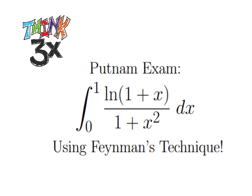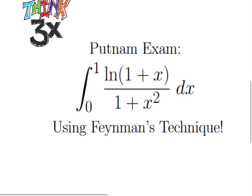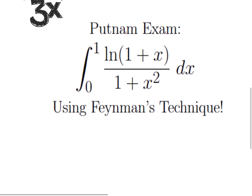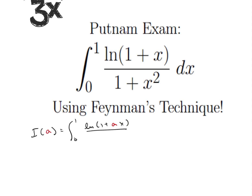Feynman's technique is a method for solving integrals where we introduce a dummy variable. The reason we introduce the dummy variable is to get the integral in a form that we can integrate with respect to x. This thing right here looks really, really ugly. It's not impossible to integrate with respect to x, but it's pretty tough. So what we're going to try to do is make it a little bit easier on ourselves.